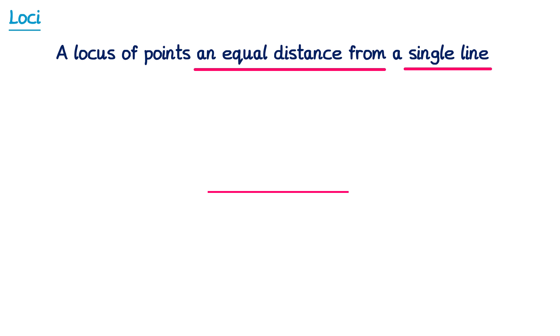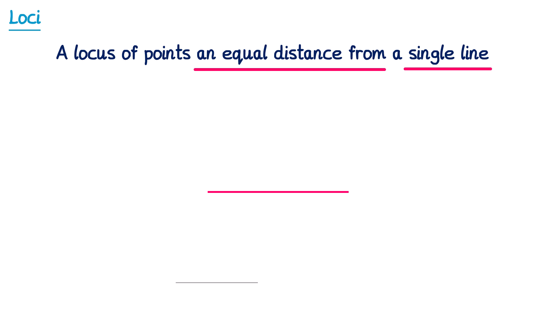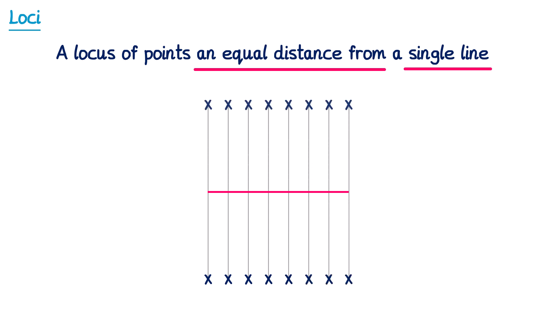With that in mind, the equal distance will be given in the question — let's say 4cm. We're looking for any point that's 4cm away from the line. Below the line, this point is 4cm away, as are these, and any of these. We can do the same above the line — all of those are 4cm away as well.